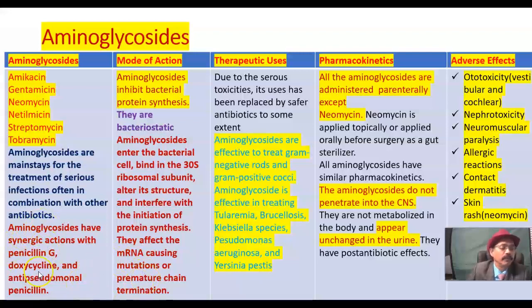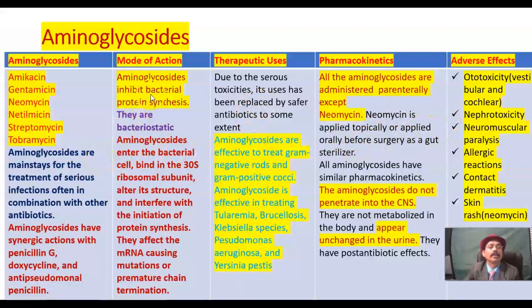It is also synergistic with doxycycline and other anti-pseudomonal penicillins. Mode of action: aminoglycosides inhibit bacterial protein synthesis. They are bacteriostatic. Aminoglycosides enter the bacterial cell by an oxidative mechanism or through porins on the cell wall, bind to the 30S ribosomal subunit, alter its structure, and interfere with initiation of protein synthesis. They affect the messenger RNA causing mutation or premature chain termination.